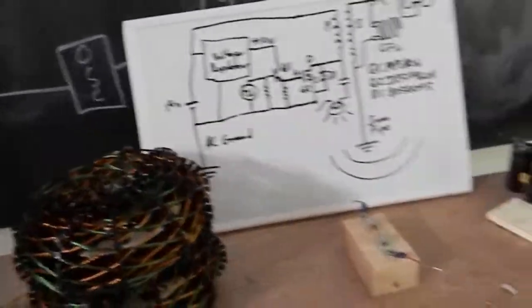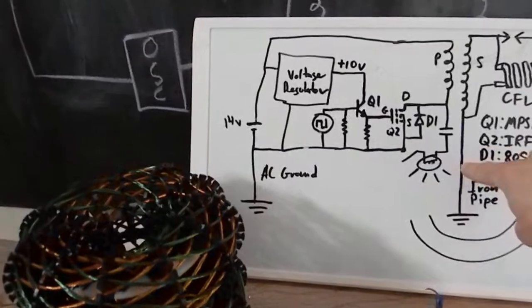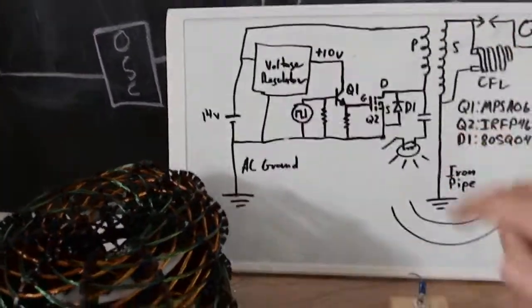Because when we have the probe on the iron pipe we see oscillations in the ground when the spark happens.